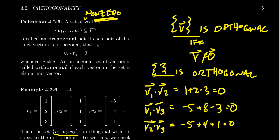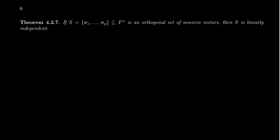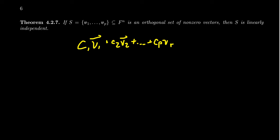Why is it so important that we exclude the zero vector? It turns out the main reason is the following theorem: if S is a set of vectors v1 up to vp inside of F^n, and this set is orthogonal with all non-zero vectors, then S is actually a linearly independent set. To prove this, suppose c1v1 plus c2v2 plus ... plus cpvp equals the zero vector. We want to show the only solution is the trivial one, meaning there are no non-trivial linear combinations that produce the zero vector.